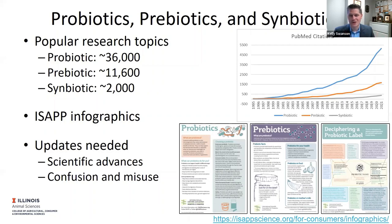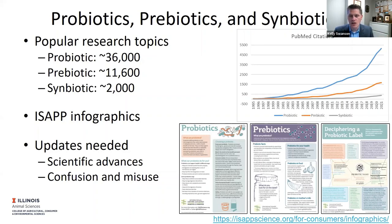One of the key struggles is keeping up with the research — all the microbiome work, probiotics, prebiotics, symbiotics — it's very difficult to interpret and apply. What's really helpful is that ISAP has a lot of different infographics on their website. These infographics take a really complicated topic and drill it down to what the definition is, how to use it, and what the criteria are. I'd really advise people to go look at those infographics.